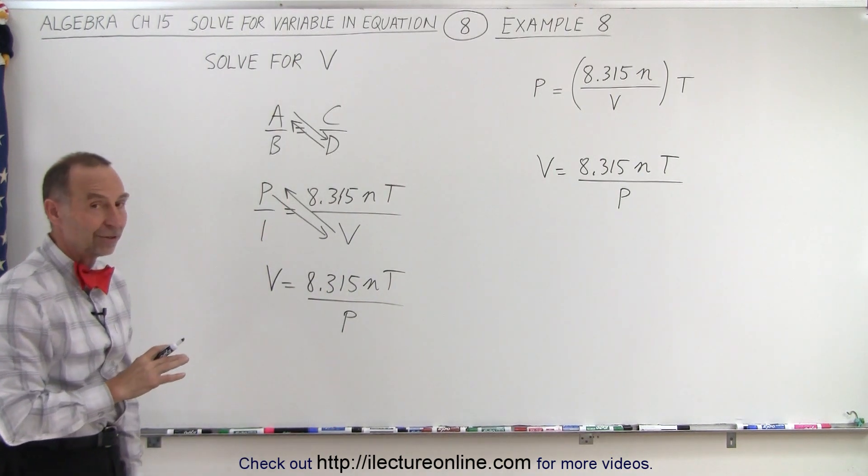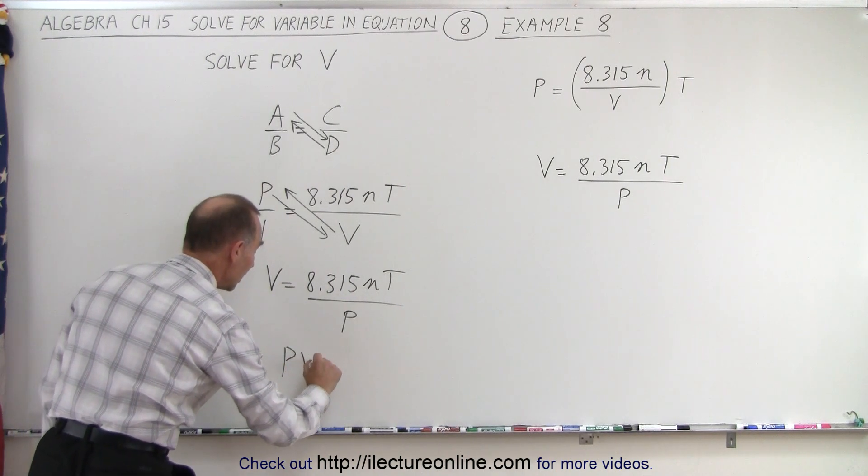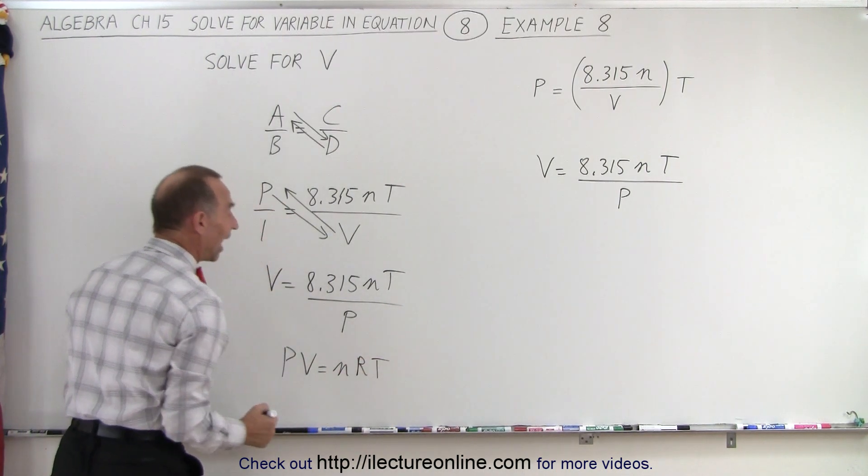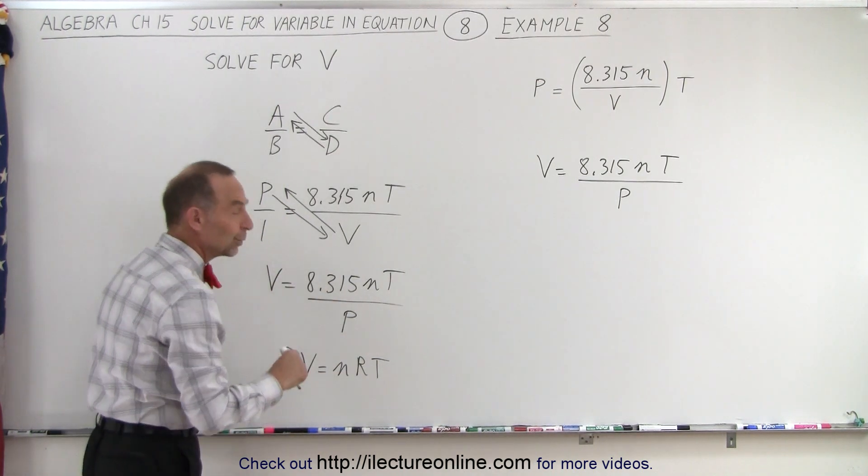And in addition to that, you might recognize this from the equation pv equals nrt, which is the ideal gas equation, where r is the gas constant, 8.315.